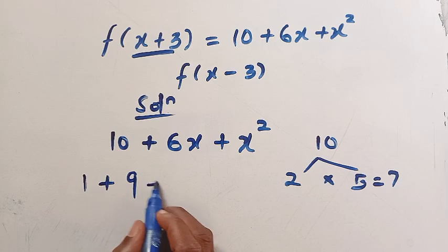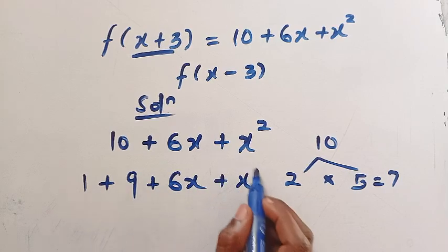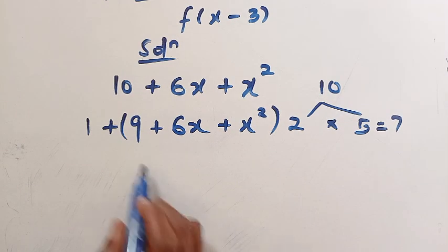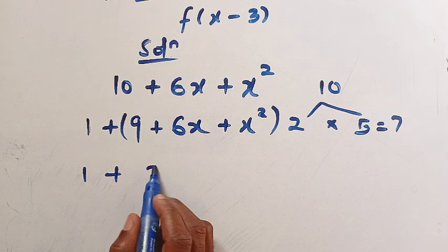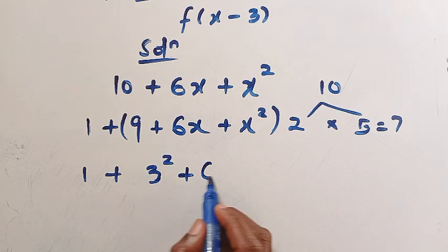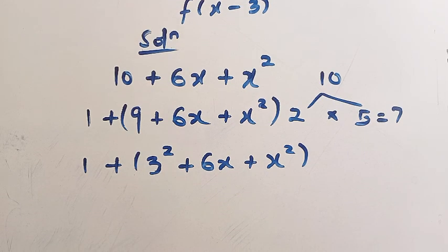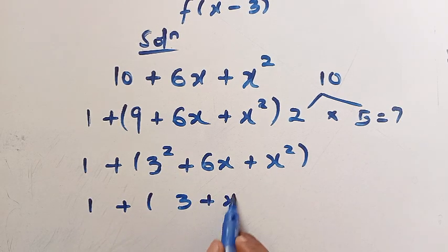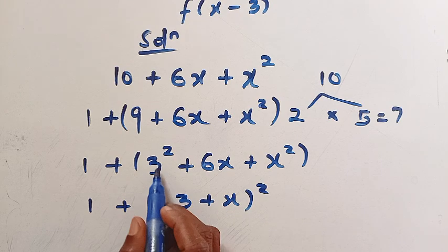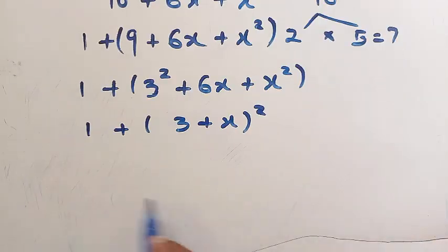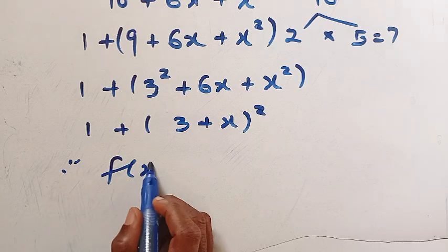We're going to rewrite 10 as 1 plus 9, so we have 1 plus 9 plus 6x plus x squared. This works better because we can write 9 as 3 squared, giving us 1 plus (3 squared plus 6x plus x squared) in brackets. By expanding (3 plus x) squared we get 3 squared plus 6x plus x squared, so the whole function becomes f(x+3) equals 1 plus (3 plus x) squared.